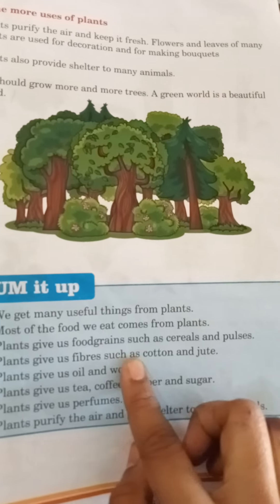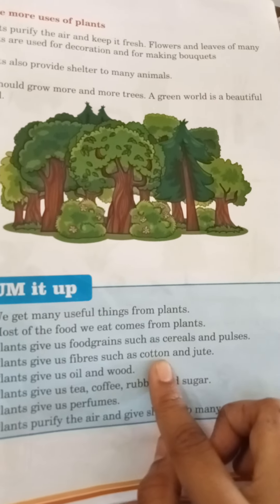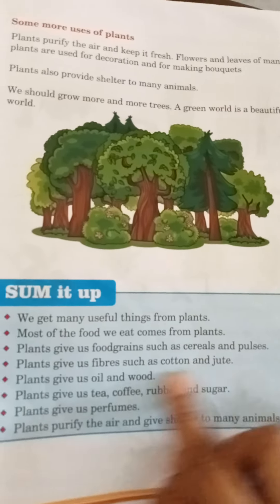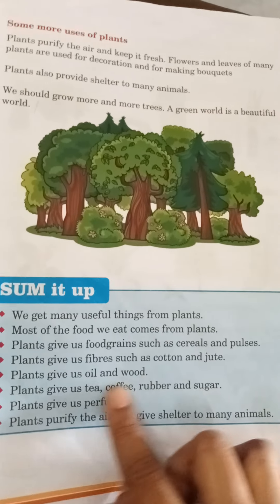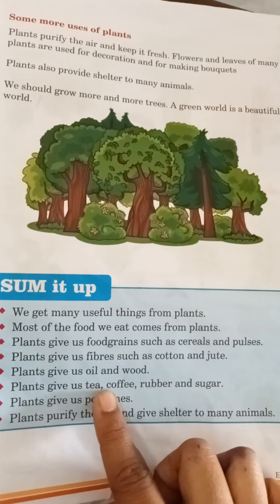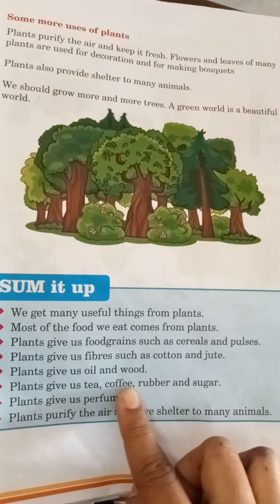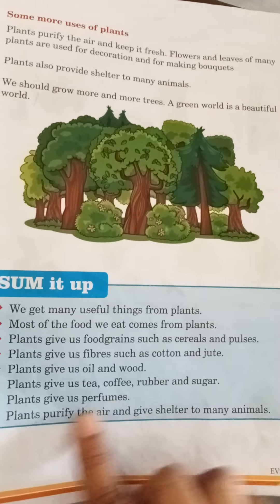Plants give us fiber such as cotton and jute. Plants give us oil and wood. Plants give us tea, coffee, rubber, and sugar. Plants give us perfumes. Plants purify the air and give shelter to many animals.